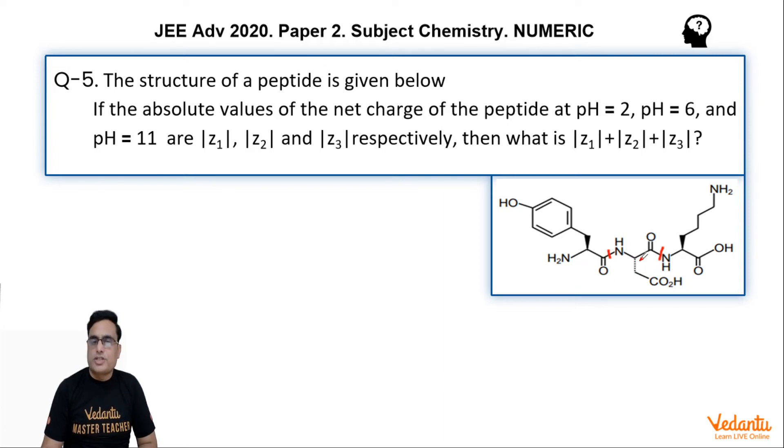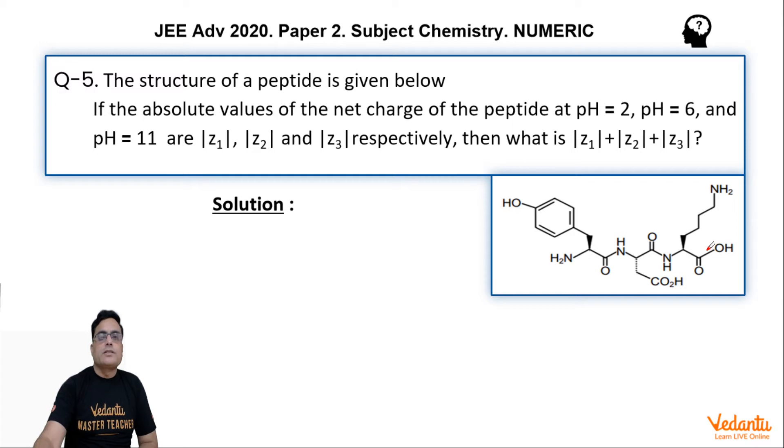Now at pH equal to 2, first of all, I'll mark this NH2 - this is NH2 number 1, which is the most basic nitrogen here. And this is NH2 number 2.